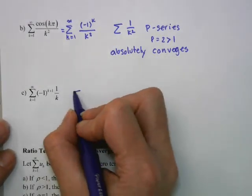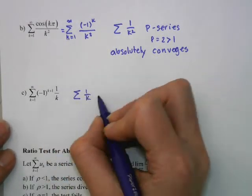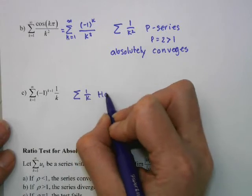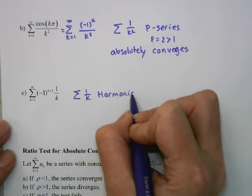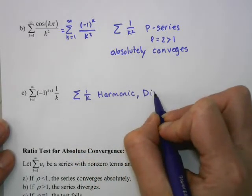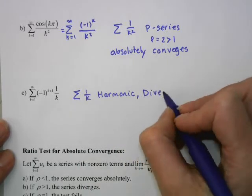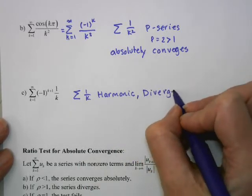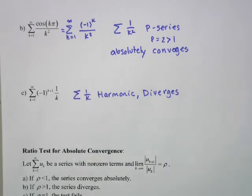For the series 1/k — that's the harmonic series — it diverges, so this series does not converge absolutely.